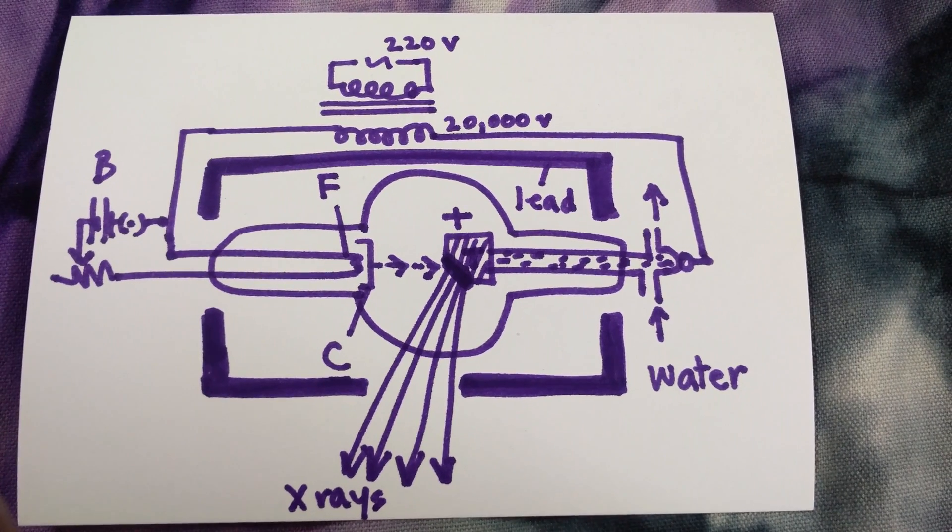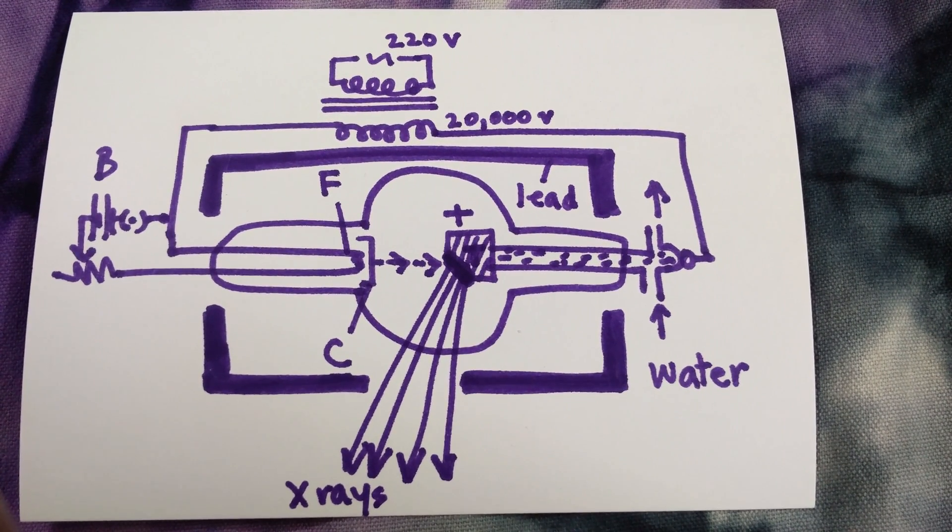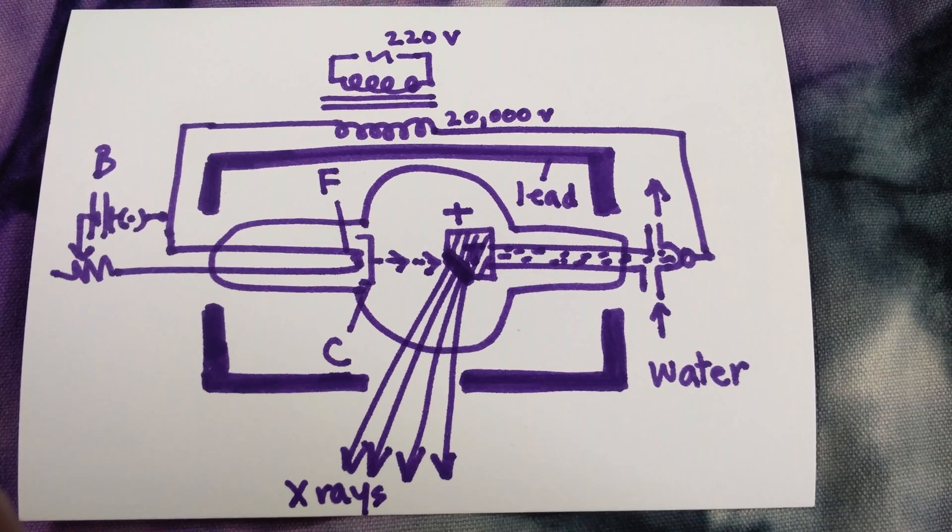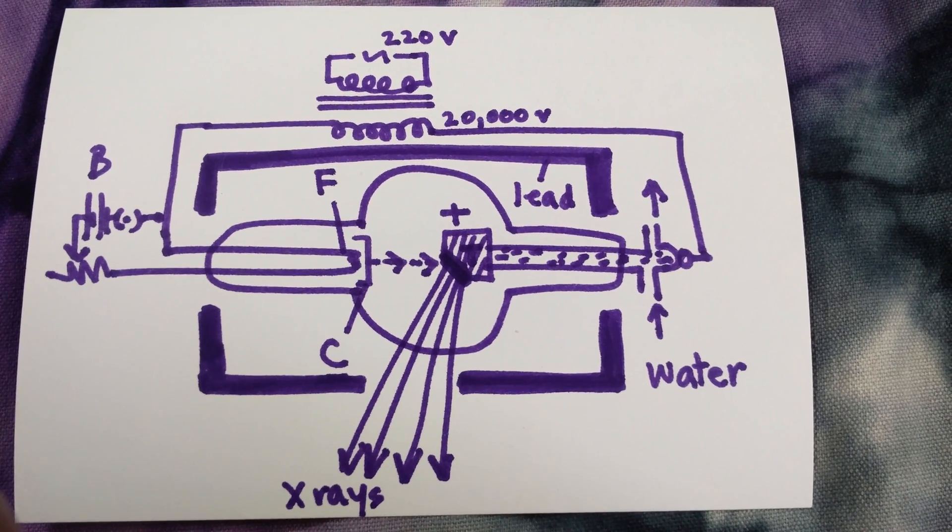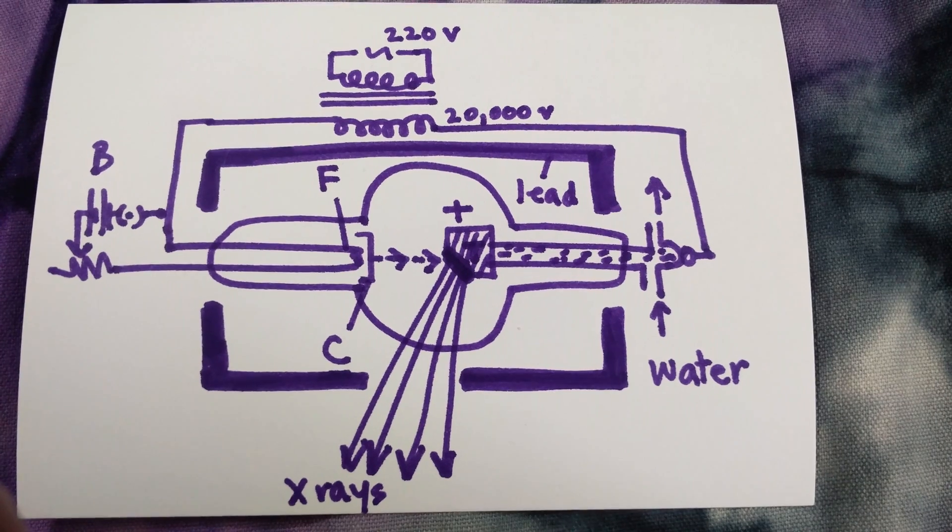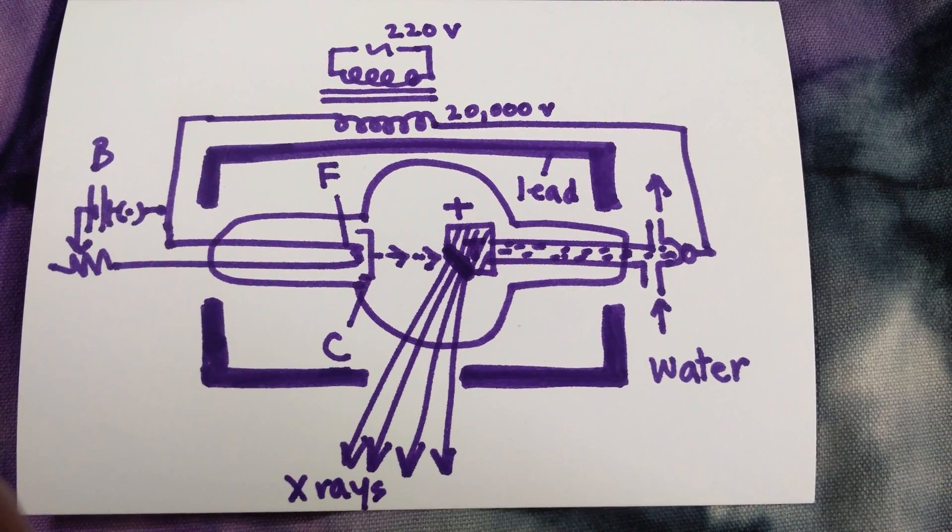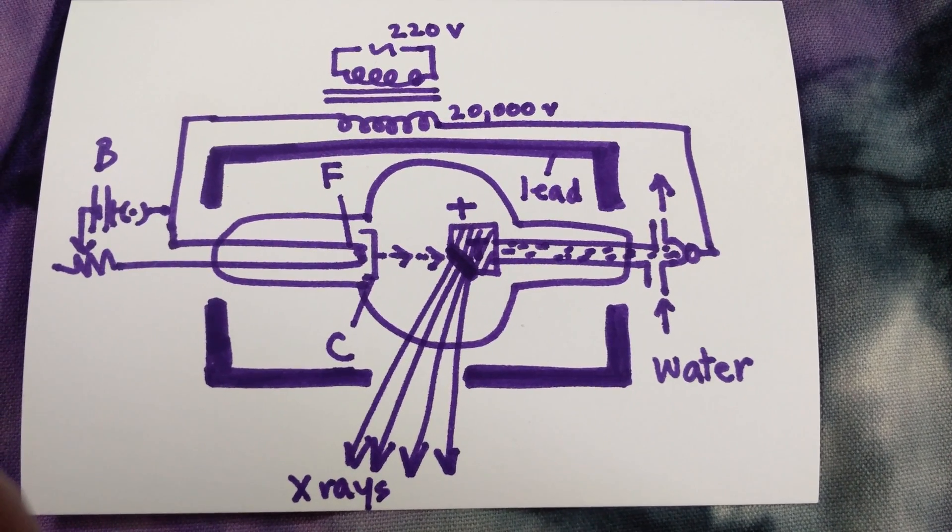Electrons emitted from the filament strike the target only during one half of the alternating potential difference cycle, when the target is positive with respect to the filament. During the other half cycle, the target becomes negative and electrons are repelled.